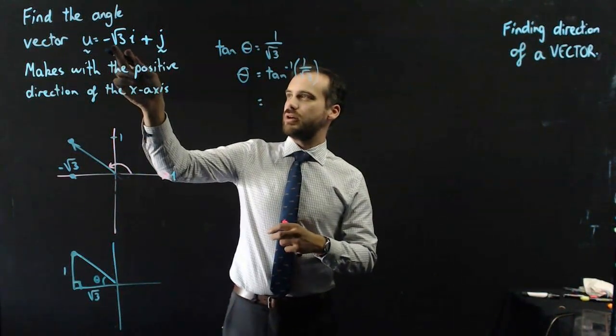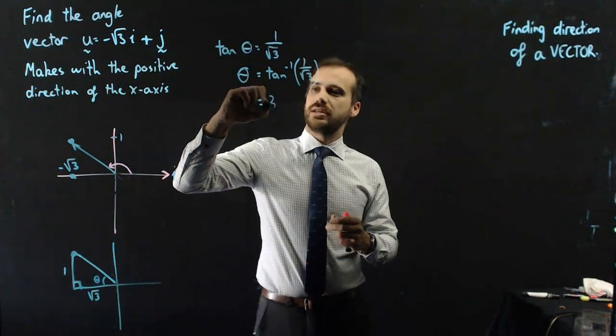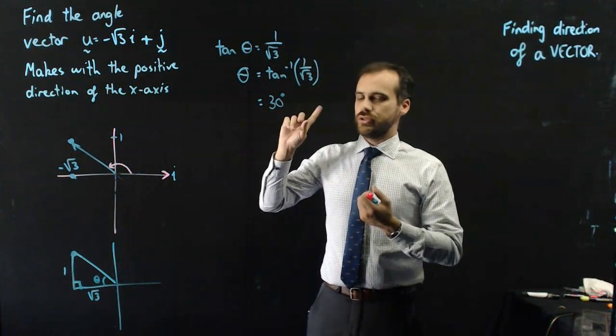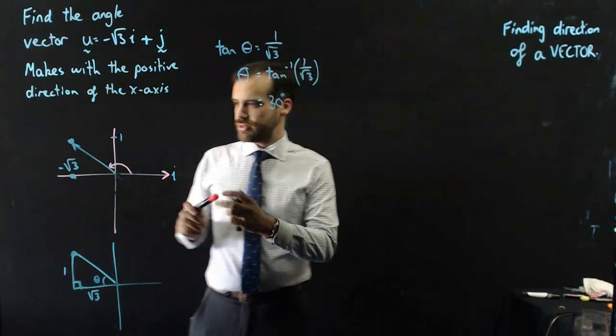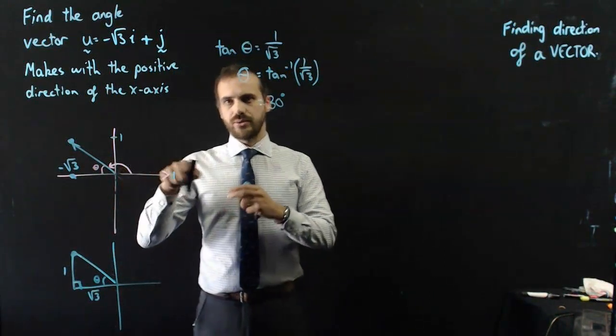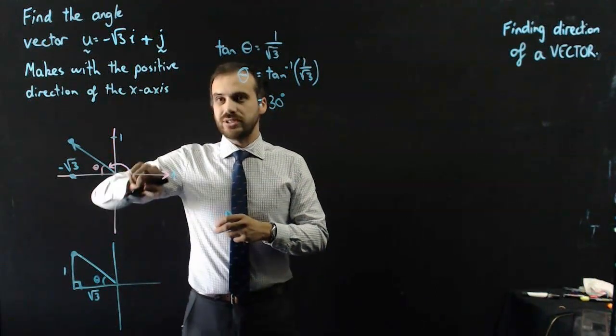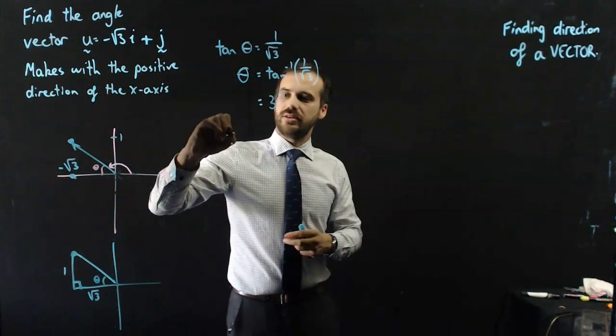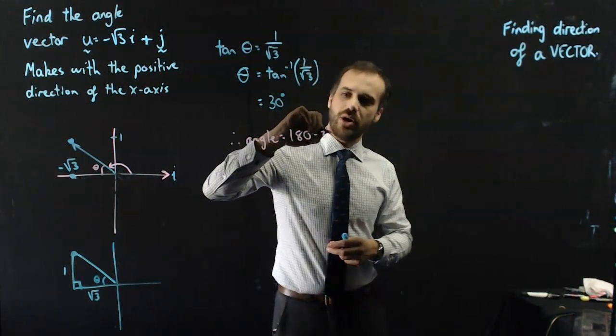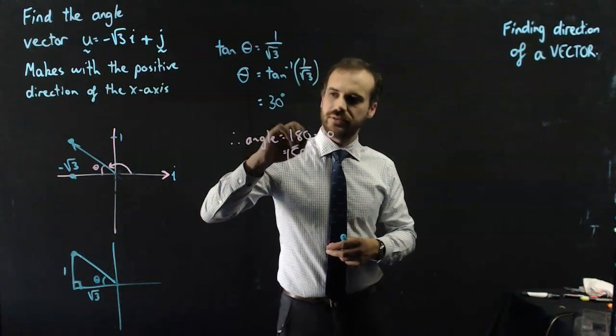And you should see now that I chose this number root 3 and 1 because it spits out a very nice, neat answer of 30 degrees. Now, you might be thinking, well that's the answer, I'm finished. No. I just found that angle here. You need that angle. So, we now know that if that's 30 degrees, that angle is supplementary to that. Therefore, angle equals 180 minus 30, which is 150 degrees.